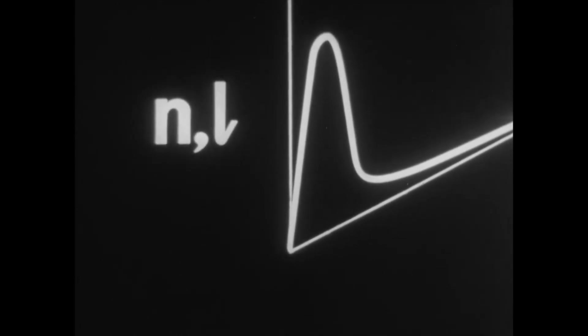The radial probability distribution function of the electron's presence in the atom is determined by the quantum numbers N and L.